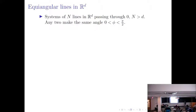We start with a system of n lines in R^d passing through the origin. In order to make things interesting, we want any two lines to make the same angle phi between 0 and pi/2. We avoid the extreme cases: 0 would imply the lines are overlapping, and pi/2 would mean they form an orthonormal set. So we want n to be greater than d.